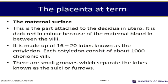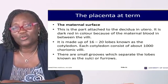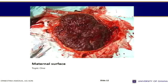Now let's look at the maternal surface. It is the part attached to the decidua in utero, or the uterine wall. It is darker red in color because there are many maternal blood vessels in between the villi. It is made up of about 16 to 20 lobes, also known as cotyledons, and each cotyledon consists of about a thousand chorionic villi. The chorionic villi are finger-like projections, and there are small grooves that separate the lobes, known as the sulci or furrows. The maternal surface is dark red and always bloody because that is the site of the maternal blood vessels.